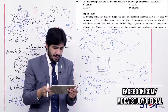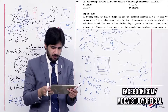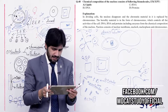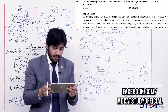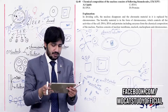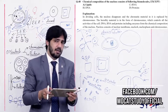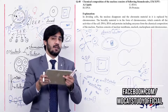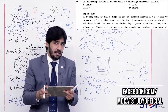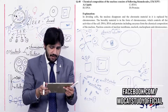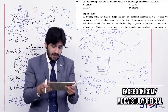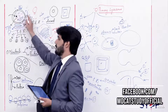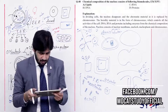Question 48: Chemical composition of the nucleus consists of the following biomolecules except — (alpha) lipids, (beta) DNA, (charlie) RNA, (delta) proteins. The nucleus contains chromatin material made of DNA and protein. RNA is also present as it is synthesized there. However, lipids are not found inside the nucleus — lipids are only found within the nuclear membrane, not inside. So the right answer is alpha — lipids.